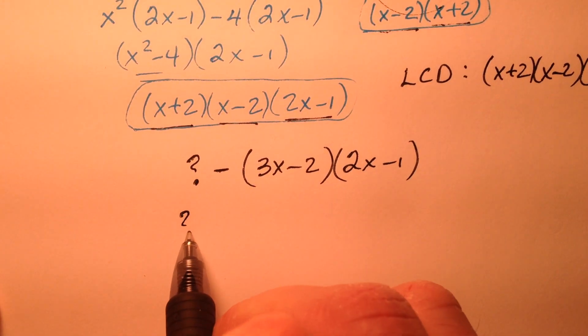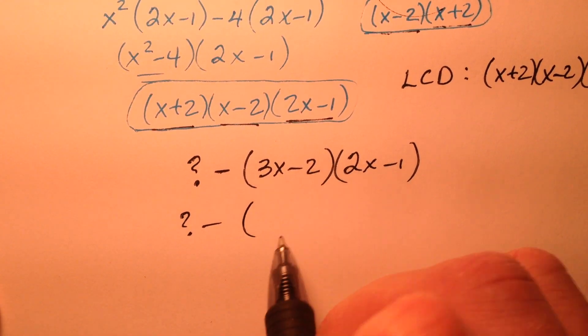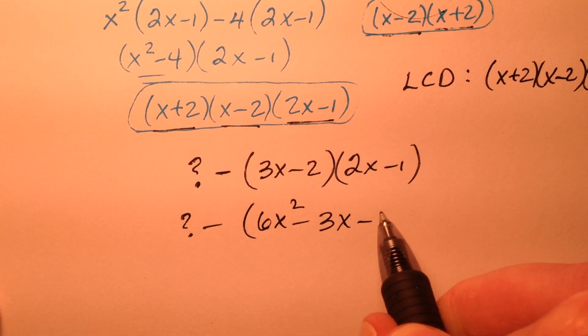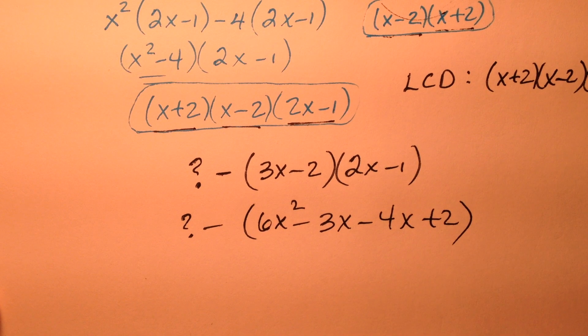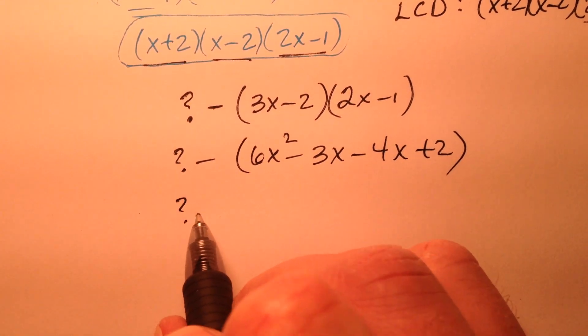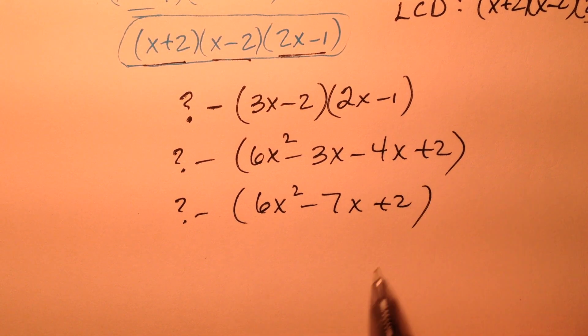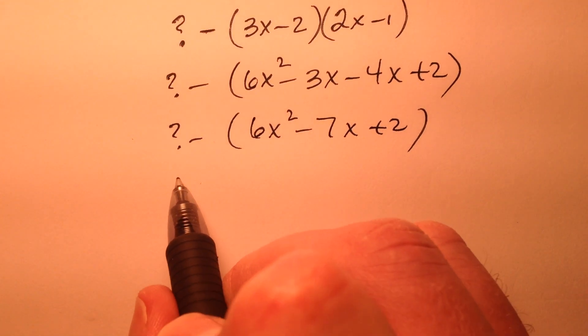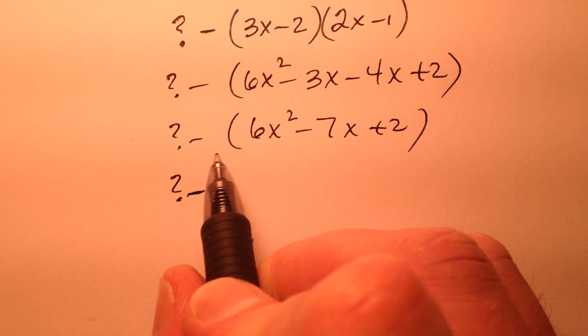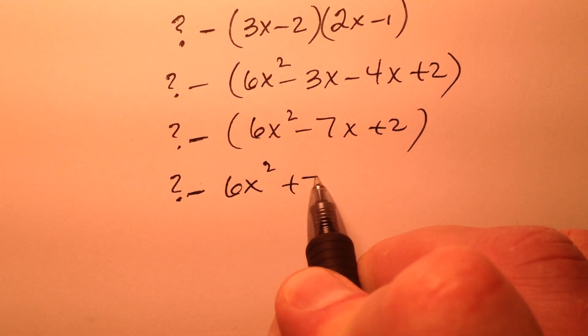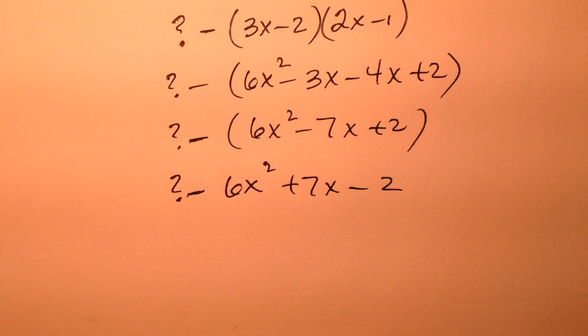So 6x squared minus 3x minus 4x plus 2. So 6x squared minus 7x plus 2. And what I've got here now is when I distribute this negative, it's minus 6x squared plus 7x minus 2.